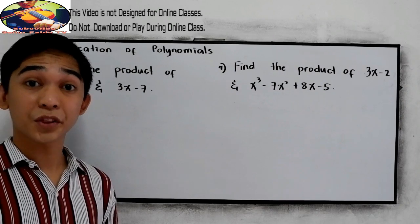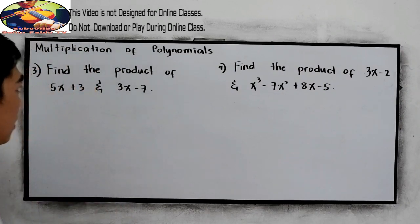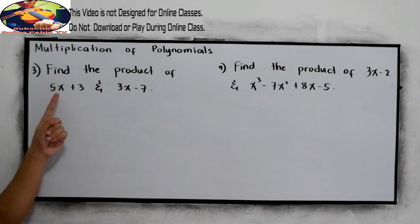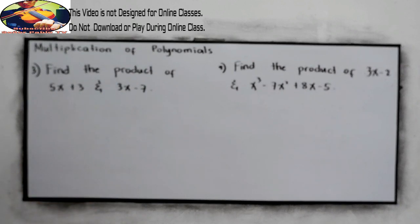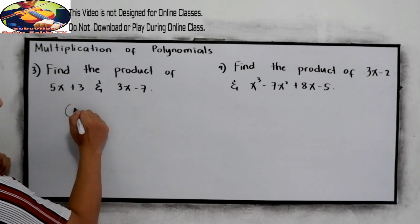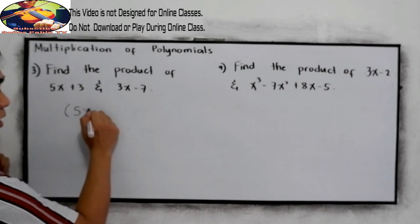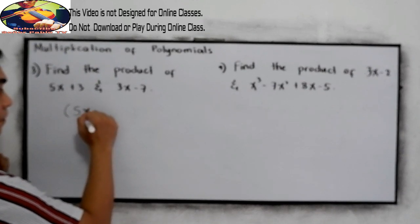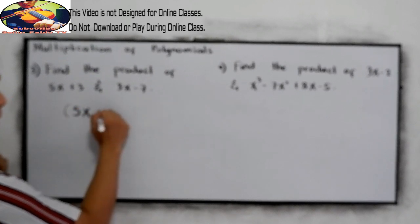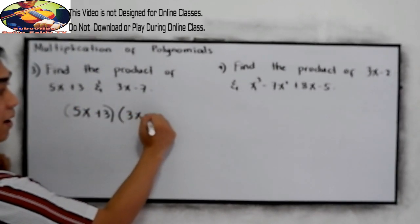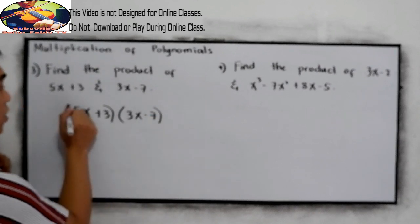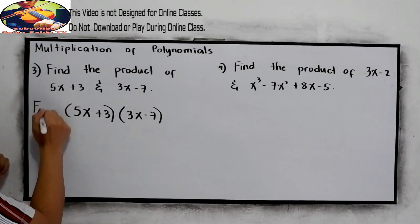Now let's have our third example. Find the product of 5x plus 3 and 3x minus 7. So we have 5x plus 3 times 3x minus 7. So in this case, we're going to use the FOIL method.